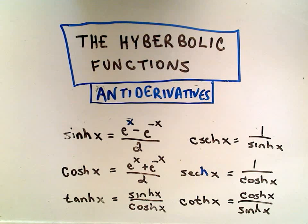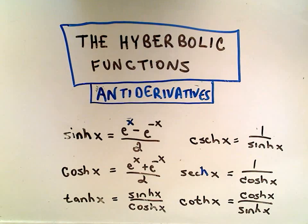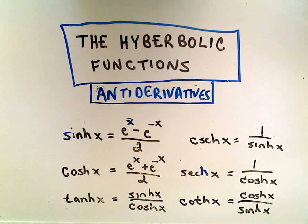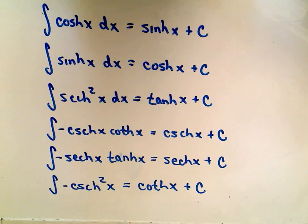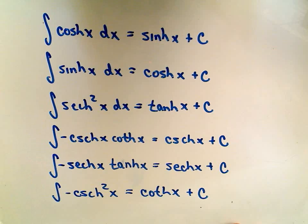Okay, in this video I'm going to talk about finding antiderivatives involving hyperbolic functions. So again, these are just the definitions of the hyperbolic functions. I talked about derivatives of hyperbolic functions in a different video. For every derivative formula, there's a corresponding antiderivative formula. And these are basically the six antiderivative formulas that go with the hyperbolic functions. So that's what I'm going to use in this video.